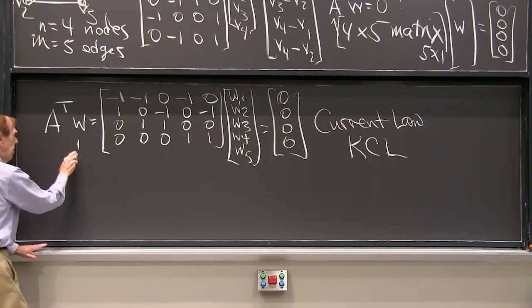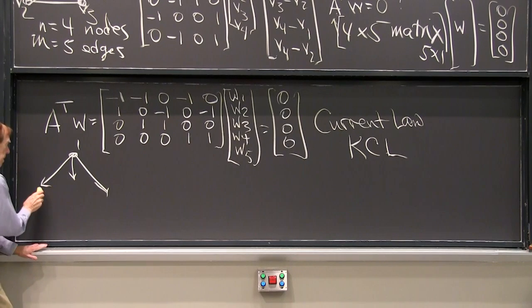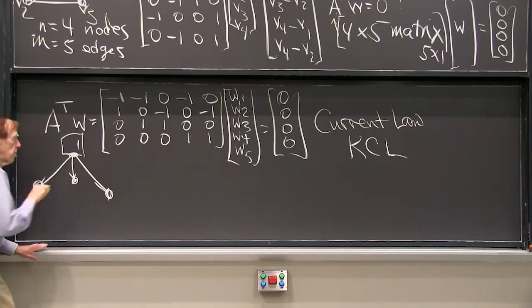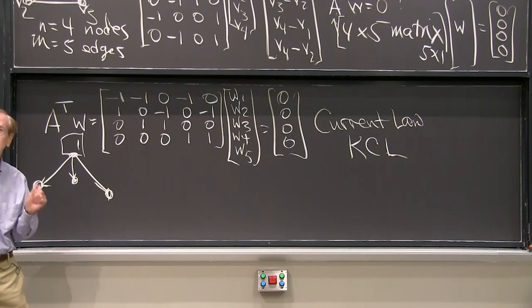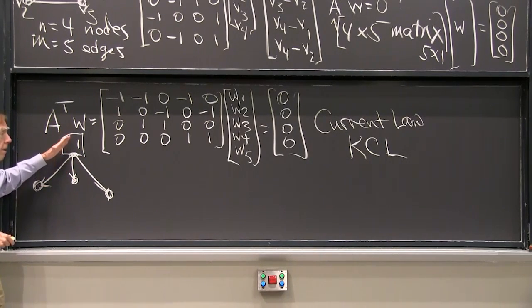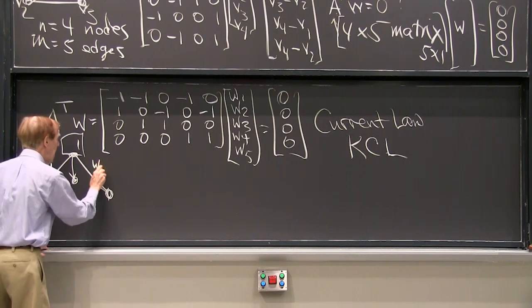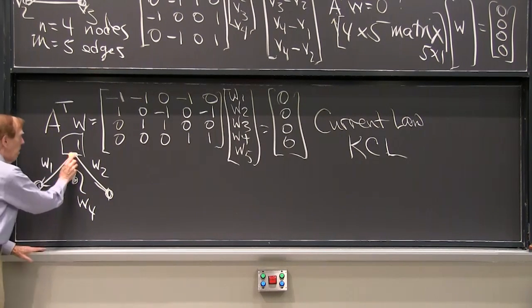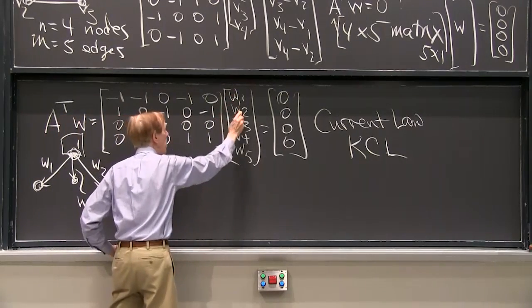It means that in the network at a typical node, so node 1, you remember, there was an edge out. Edge 1 went out. Edge 2, three edges went out, actually. This was to node 2. This was to node 3. And that was to node 4. At node 1, three edges are going out. And what does the current law tell me? It tells me that the total flow out is 0. The net flow, any flow in, which would be negative w's, and any flows out, which would be positive w's. w, that came from the first edge. This was maybe the second edge. And I think that happened to be the fourth edge. And that's what I see here. A 1, a 2, and a 4 are multiplying w1, w2, and w4.